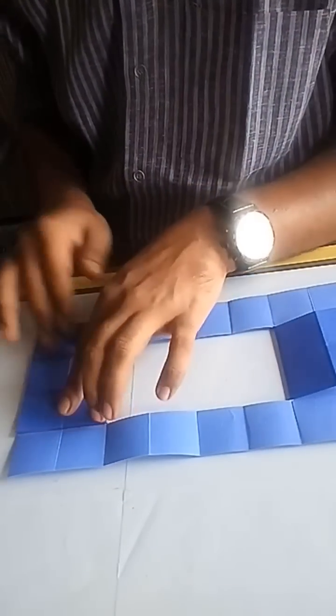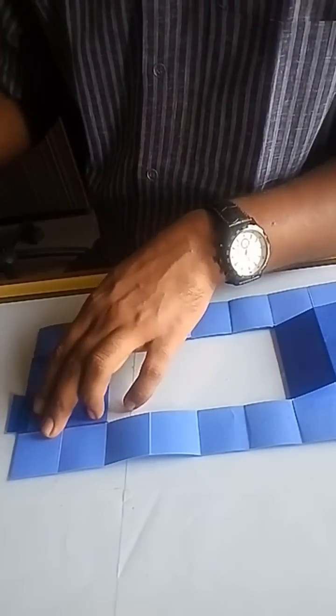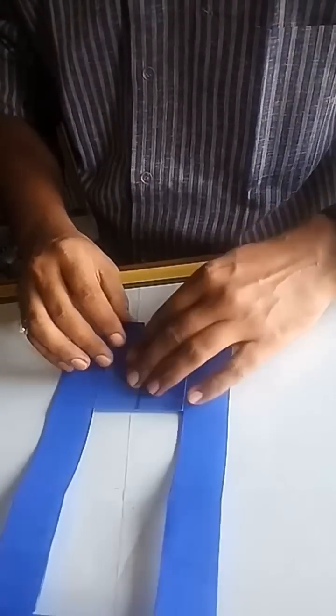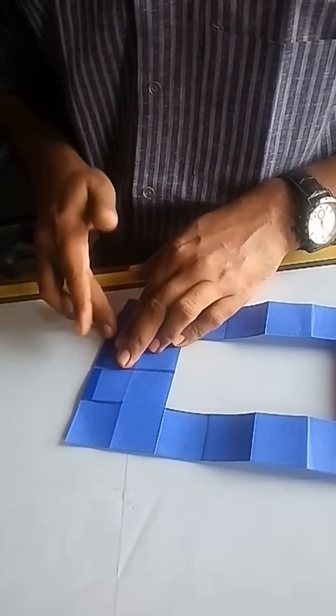Now open the sheet and you will get a four by two window at the center of the sheet. Stick both the flaps to the edges. Tape the sheet on both sides and do the same for the other flap also.